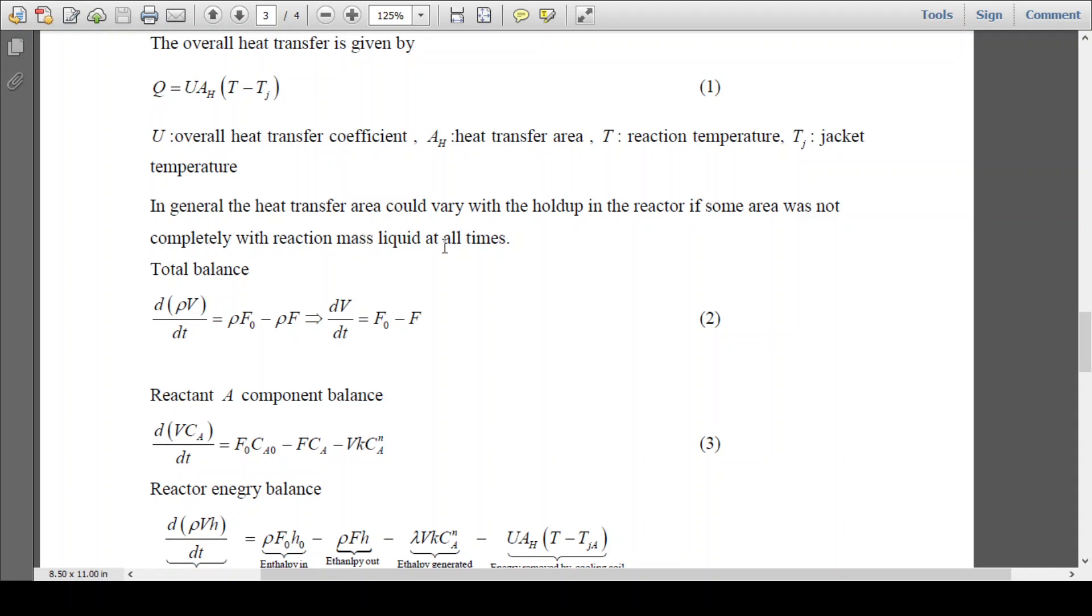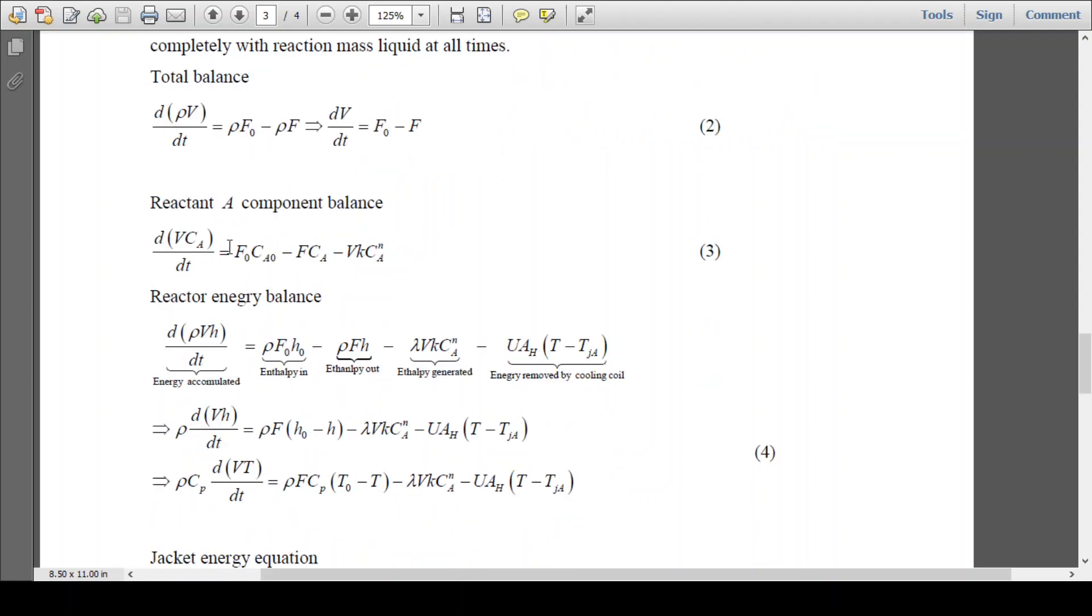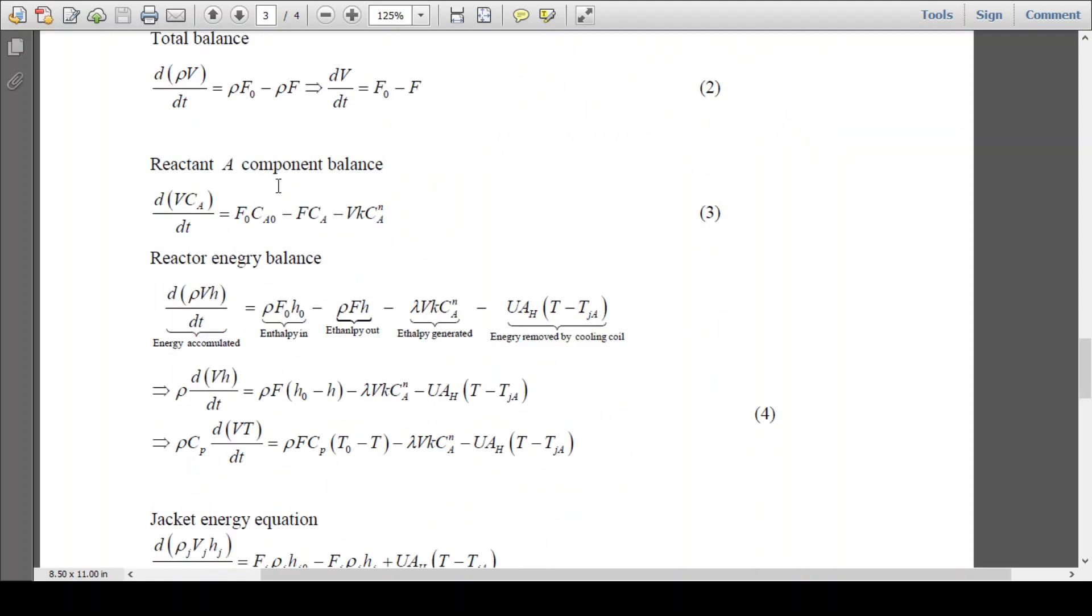Heat transfer area could vary with the holdup of the reactor. The same area was not completely with the reaction mass liquid at all times, so this is quite common. Total mass balance: dM/dt inside the reactor equals ρF0 - ρF. So density is considered to be constant throughout, so you will get dV/dt = F0 - F. Now the component balance of A inside the reactor: d(VCa)/dt = F0Ca0 - FCa - kVCa^n.